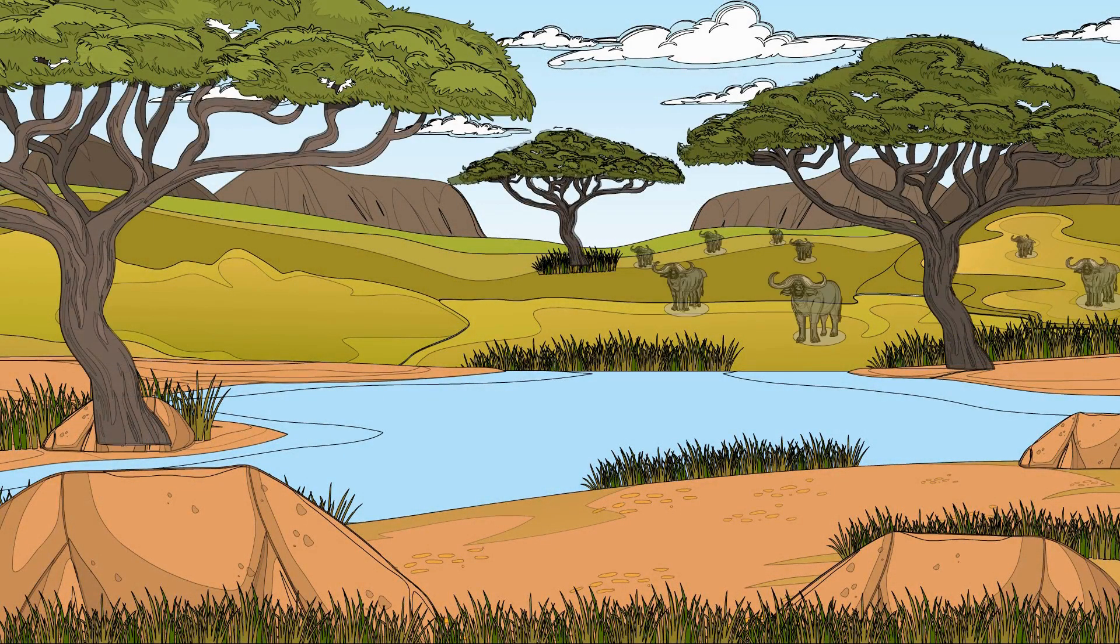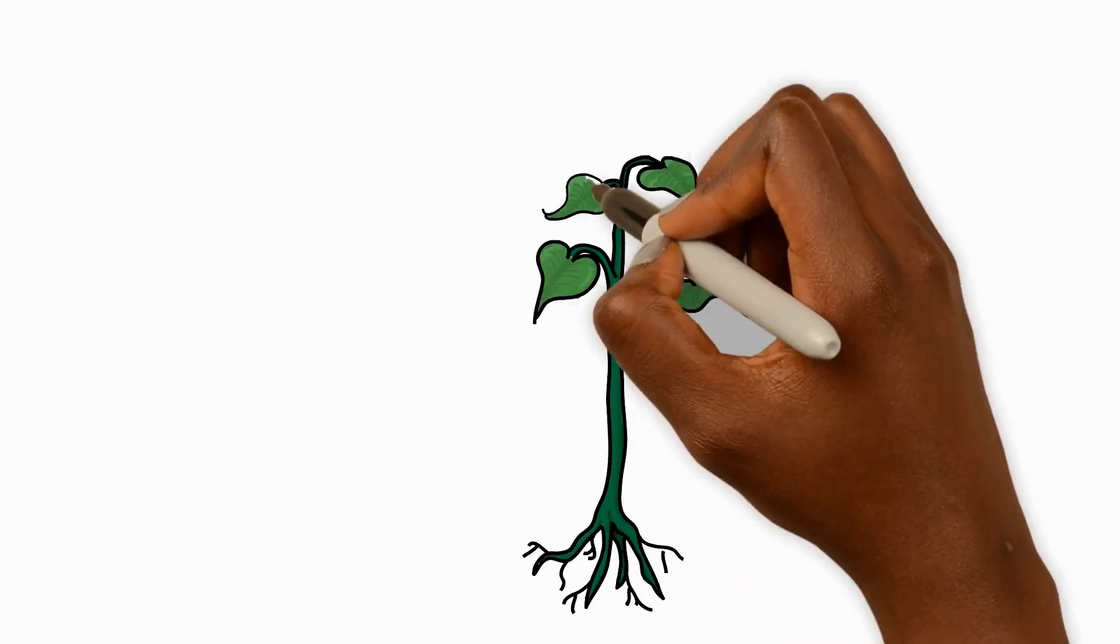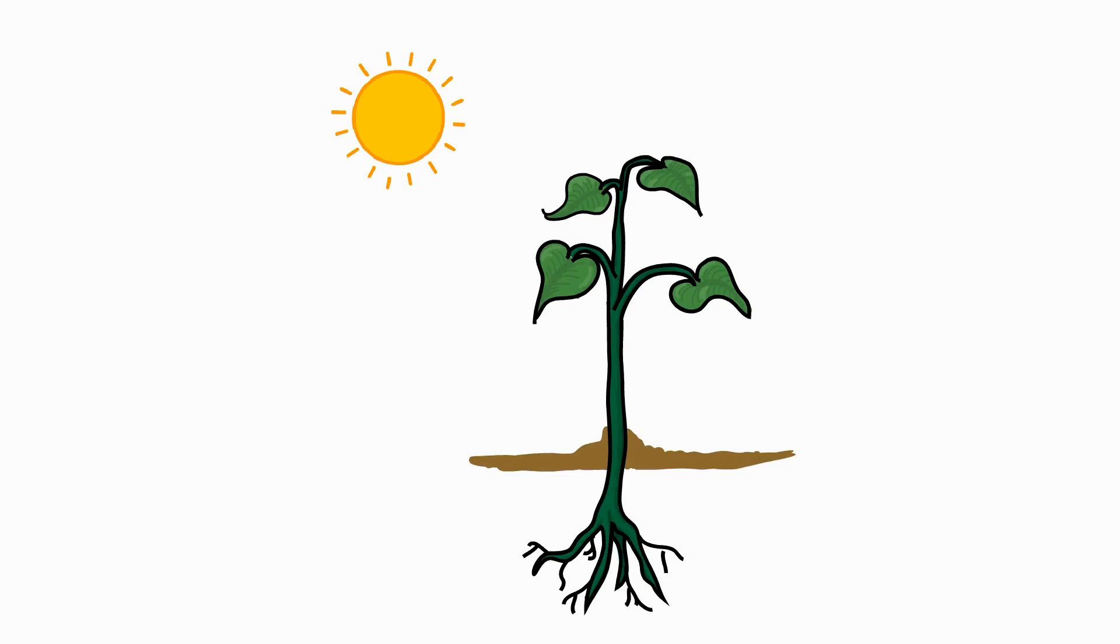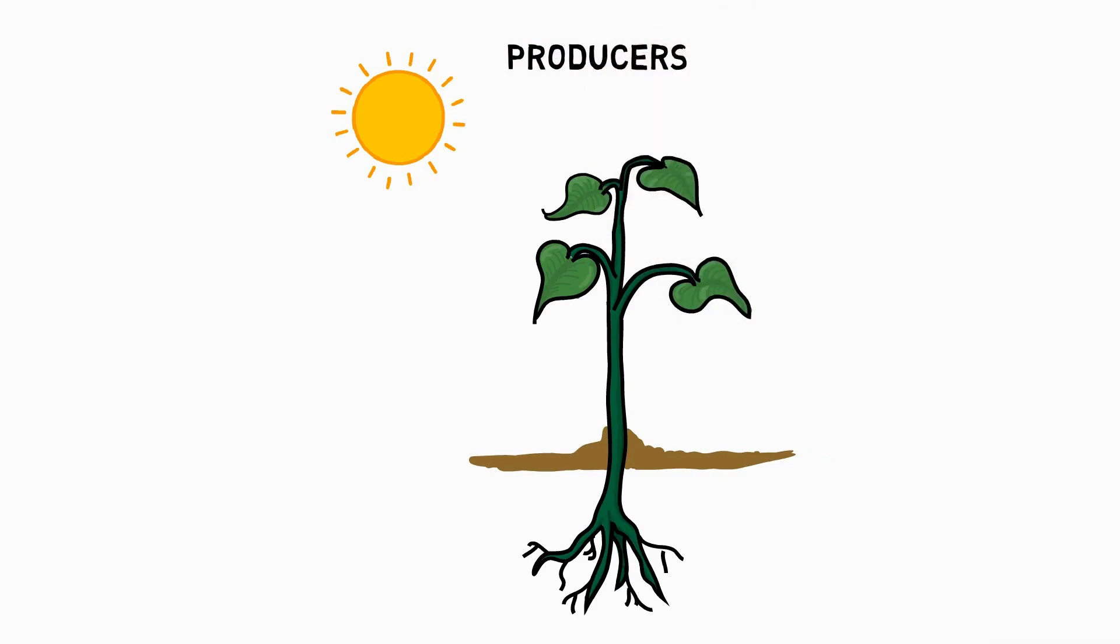All living things need nutrients to grow, to get energy, and to stay alive, but not all living things get their nutrients in the same way. Plants are a special group of living things that use sunlight energy, water, and carbon dioxide to make their own food. We call them producers. Animals, on the other hand, cannot make their own food and need to get their energy from plants or other animals.